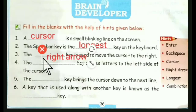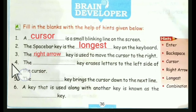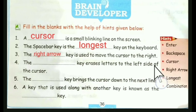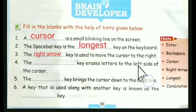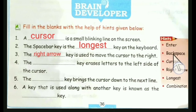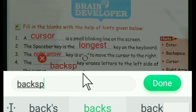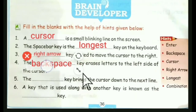The fourth question is: the dash key erases letters to the left side of the cursor. If we want to erase something from the left side of the cursor, we use the backspace key — B-A-C-K-S-P-A-C-E. Backspace is the answer to question four.